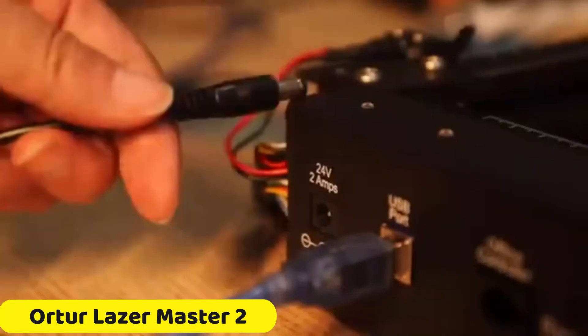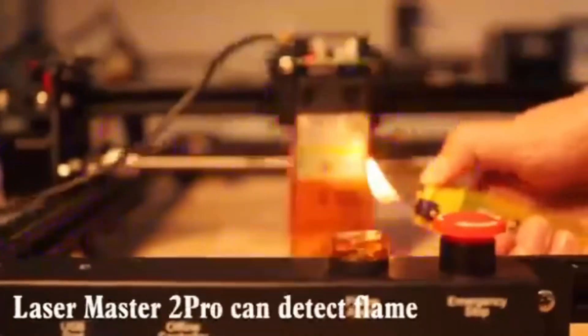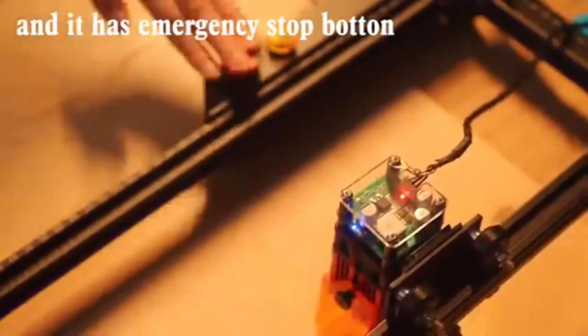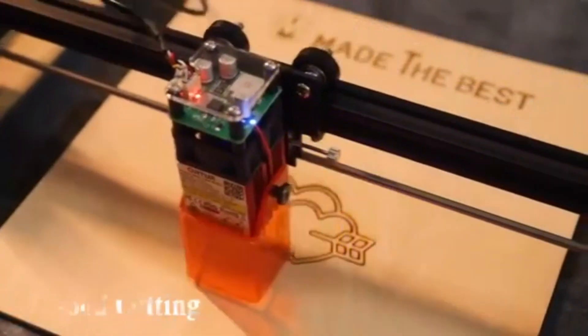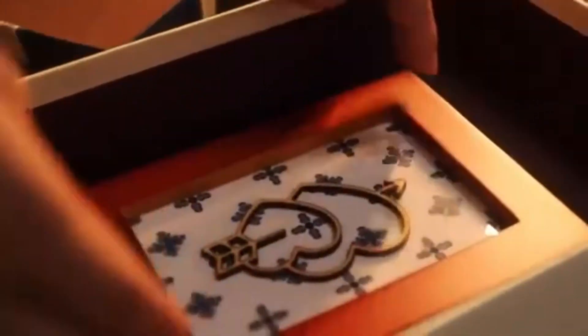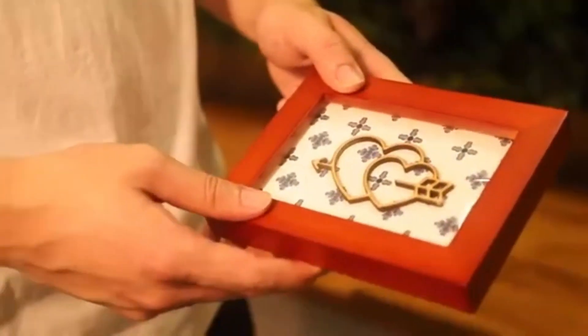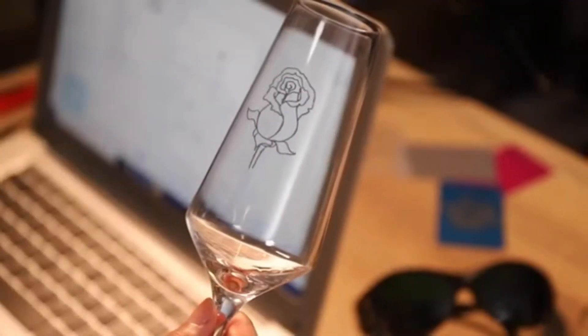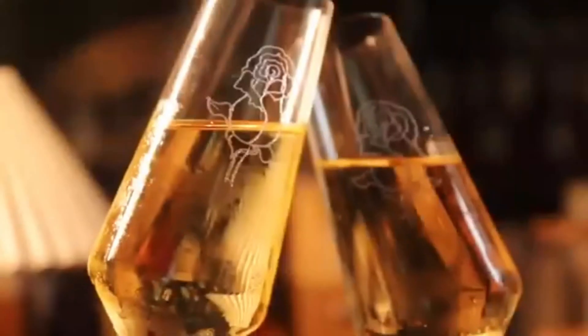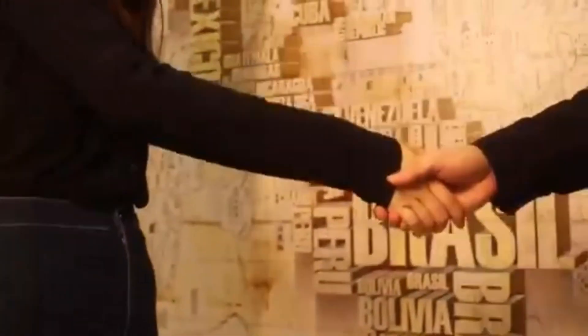Number 2. Ortur Laser Master 2 Laser Engraver. The Ortur Laser Master 2 Laser Engraver is a high-performance device that combines precision, speed, and versatility for exceptional engraving and cutting results. Its 32-bit MCU motherboard and NEMA 17 stepper motors ensure smooth movements, enhancing the overall engraving quality. The engraver delivers impressive precision with 12.5 mm in both Y and X axes, ensuring accurate and professional-grade results.